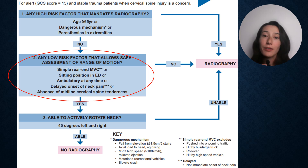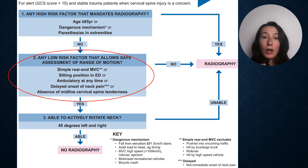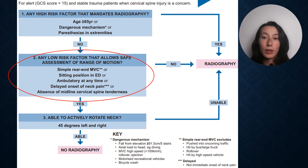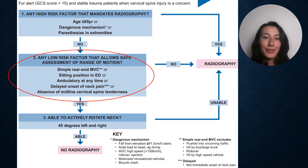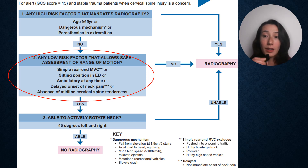If your patient does not fit into any of those high-risk categories, we move down to the next box. Understand this does not mean your patient is any less likely to have a fracture. The criteria in this box gives you the clearance to assess a person's cervical rotation active range of motion, and their range will tell you whether or not they should get an x-ray. The first criterion is a simple rear end — think of a minor bumper-to-bumper car accident, or being pushed in a crowd on Black Friday. It's something that can jolt you but it's really not that big a deal, so you should be safe enough to range the neck.